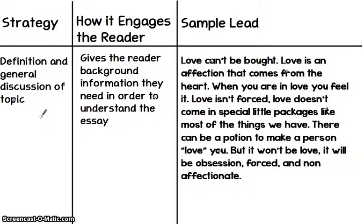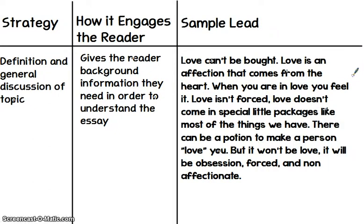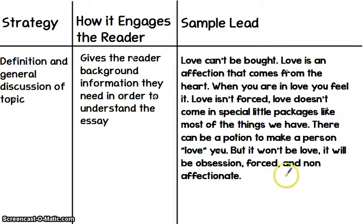The final example I'm going to apply to my 'Chaser' essay is giving a definition and a general discussion of the topic. This is engaging because it gives the reader background information they need in order to understand the essay — especially if your audience might not know much about your topic or needs basic information to understand the body paragraphs. For example: 'Love can't be bought. Love is an affection that comes from the heart. When you are in love, you feel it. Love is not forced. Love doesn't come in special little packages like most things we have. There can be a potion to make a person love you, but it won't be love — it will be obsession, forced and non-affectionate.'